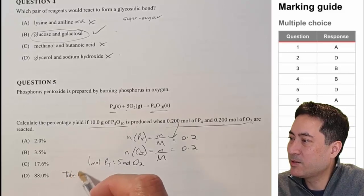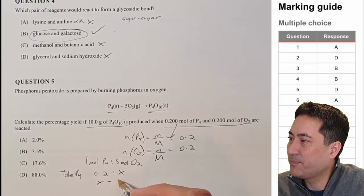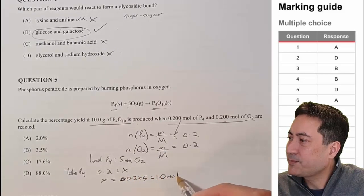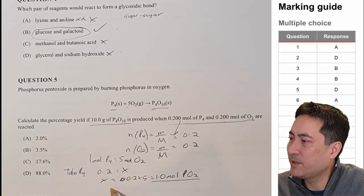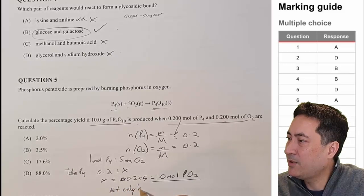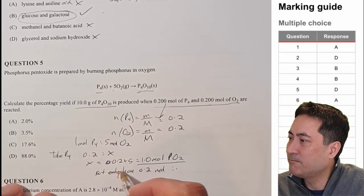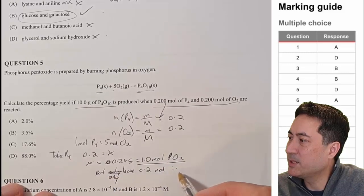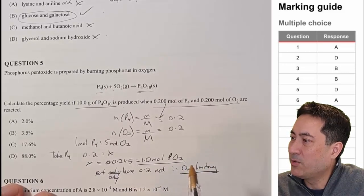I've got to work out which one's limiting. I'll do the proper working so I don't stuff it up. Take P4: 0.2 is to X — cross multiply — and that gives me one mole of O2. But I only have 0.2 moles of O2 and I need one. So O2 must be the limiting reagent. I know that's the one to work with; I can forget about the P4.